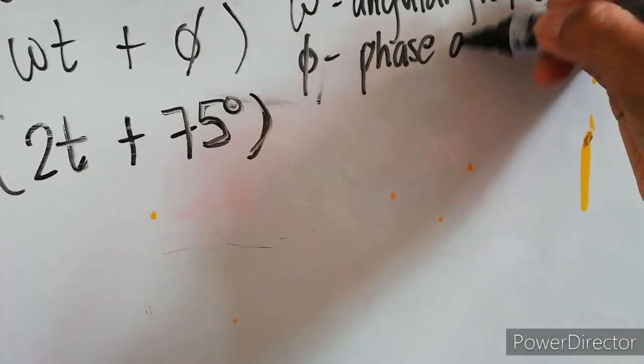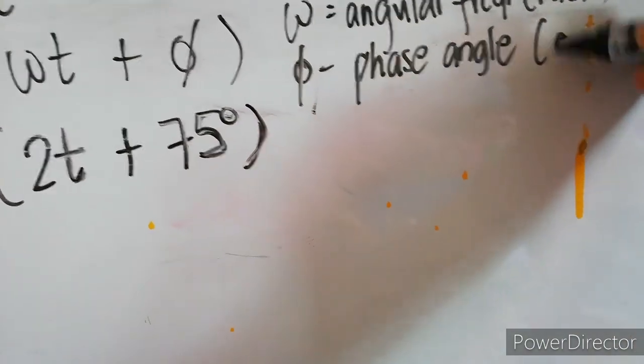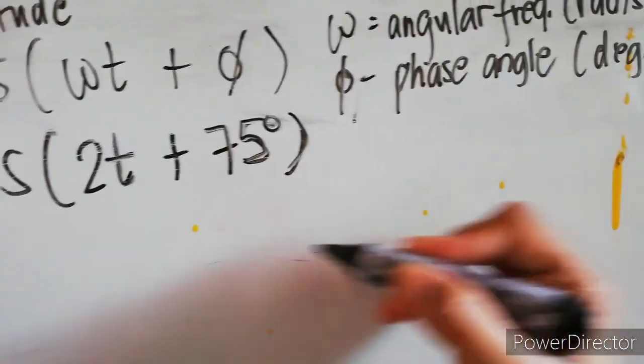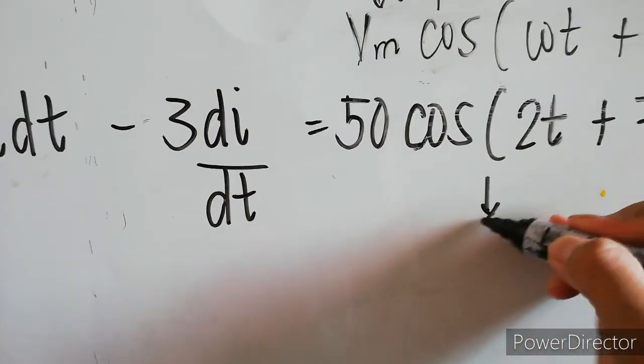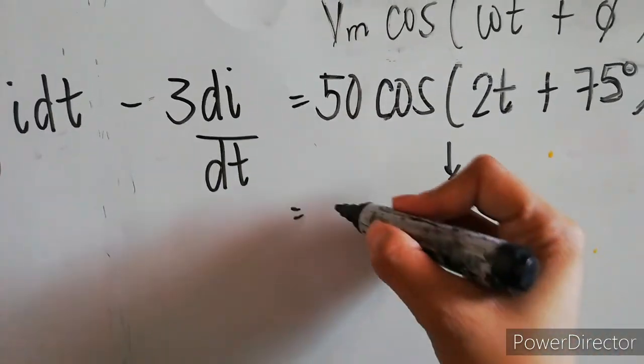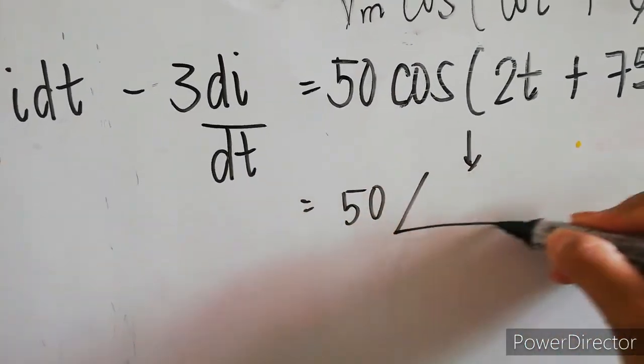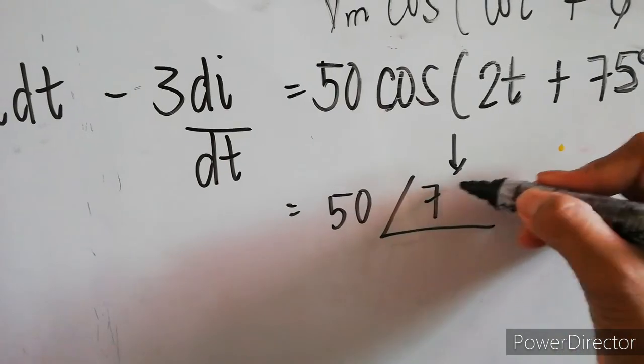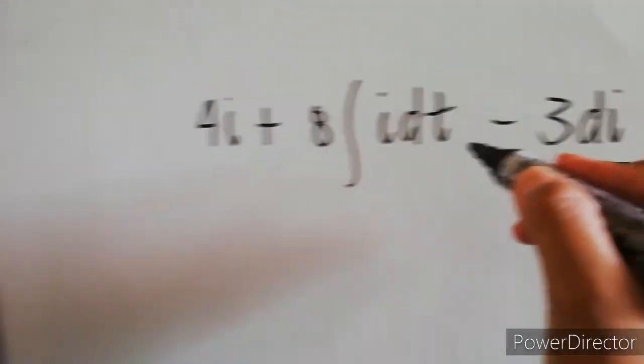And, of course, t is time. Now, if we convert this into phasor form, that is equivalent to 50∠75°.